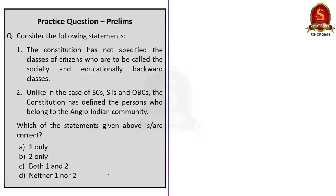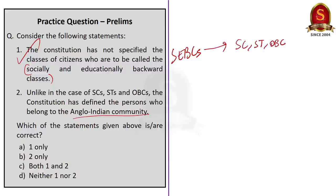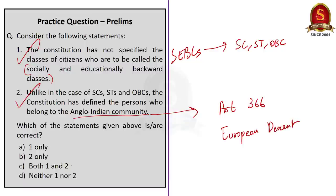Now let us take up this next two-statement question. Statement one says: the constitution has not specified the classes of citizens who are to be called the socially and educationally backward classes. This is correct — the constitution does not specify who are to be called SEBCs. Statement two says: unlike in the case of scheduled castes, scheduled tribes, and other backward classes, the constitution has defined the persons who belong to the Anglo-Indian community. According to Article 366, Anglo-Indian means a person whose father or any male progenitor in the male line is or was of European descent. So statement two is also correct, and the correct answer is option C — both one and two.